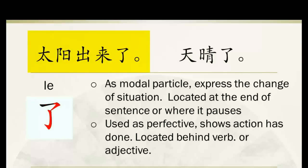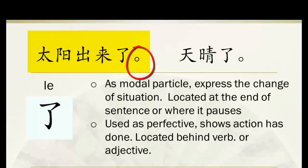太阳 is the sun. 出来 means come out. The zi 了 here doesn't have an actual lexical meaning — it's used as a modal particle placed at the end of the sentence. Chinese periods are small circles, unlike English dots. You can say 太阳出来了 not only for sunrise but also when it's been raining or cloudy and then turns sunny — the rain stopped or the clouds disappear, and you say 太阳出来了.